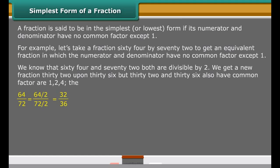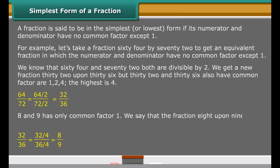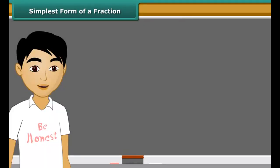2, 4. The highest is 4. 8 and 9 have only common factor 1. We say that the fraction 8 upon 9 is the simplest form of 64 upon 72.